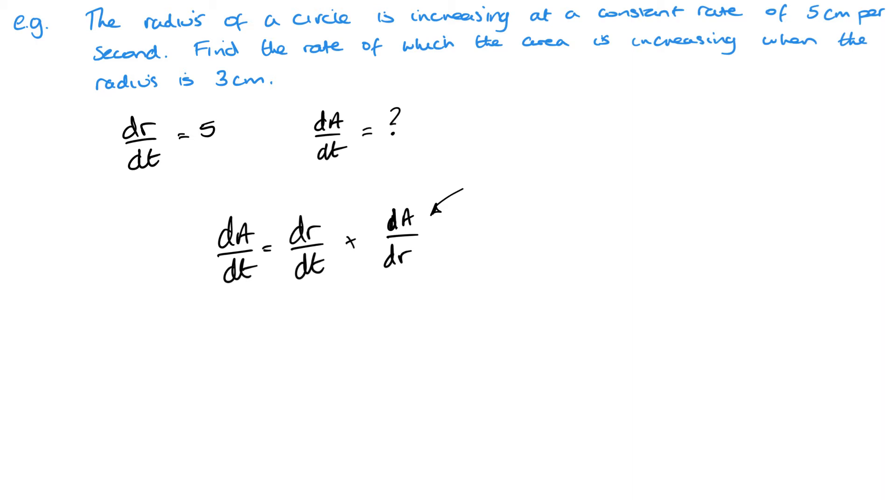Look at the question and think about how we can get that. That means that we needed something that was in terms of A and R. So that would be the area of the circle. Area equals πr². And differentiating this will give me dA/dr. So dA/dr is 2πr. Now we can fill this in. So dr/dt we know is 5. dA/dr is 2πr. Therefore, our answer for dA/dt is 10πr.